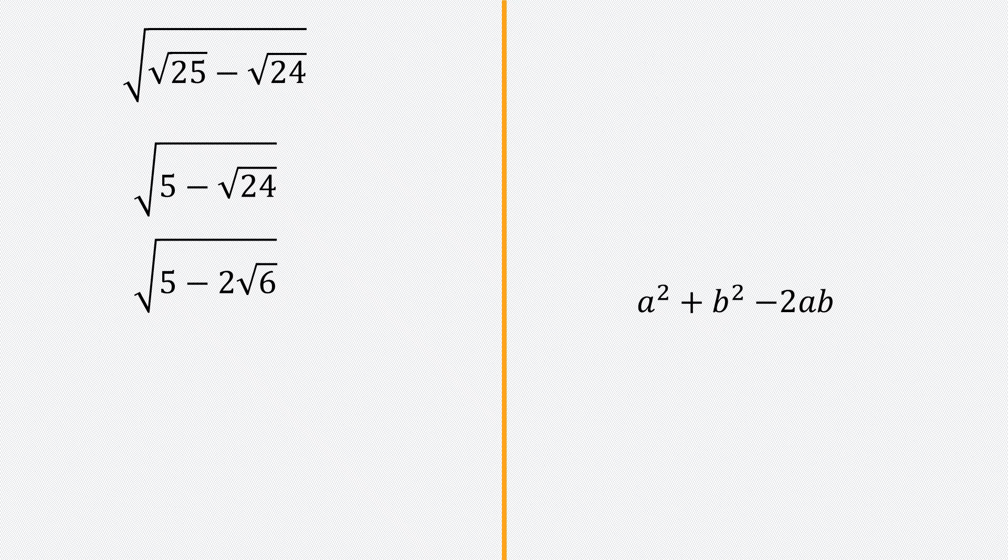So to achieve this, I can use root 2 for a and root 3 for b. That way, a squared plus b squared, that's root 2 squared is 2, root 3 squared is 3. So 2 plus 3 is indeed 5. And ab, that's root 2 times root 3, is indeed root 6. So I can write what's under the expression using root 2 and root 3 like this.